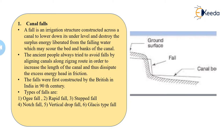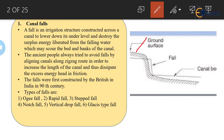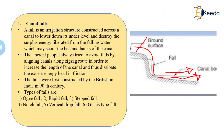Let's start with our first structure — the canal fall. A fall means water is allowed to fall down at a given depth. As you can see in the image, the ground surface is shown here, and the water will be allowed to fall onto this surface and then the discharge will be taken through the bed channel again. A fall is an irrigation structure constructed across a canal to lower its water level and destroy the surplus energy liberated from the falling water.